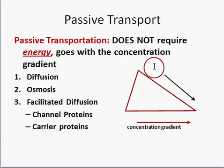The concentration gradient goes from a high region to a low region. We have three types of passive transport: diffusion, osmosis, and facilitated diffusion, which means diffusion aided by other molecules — channel proteins or carrier proteins.